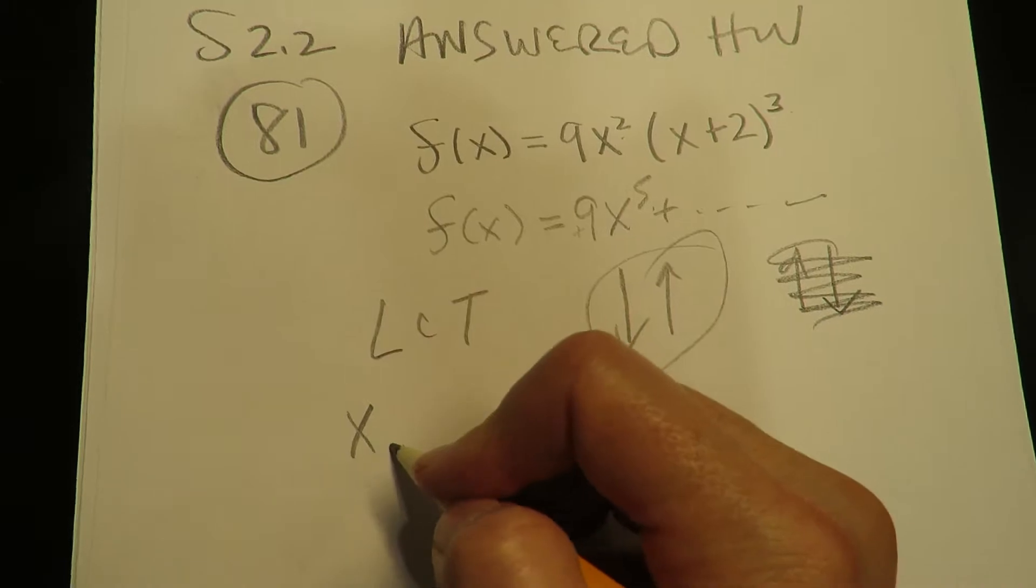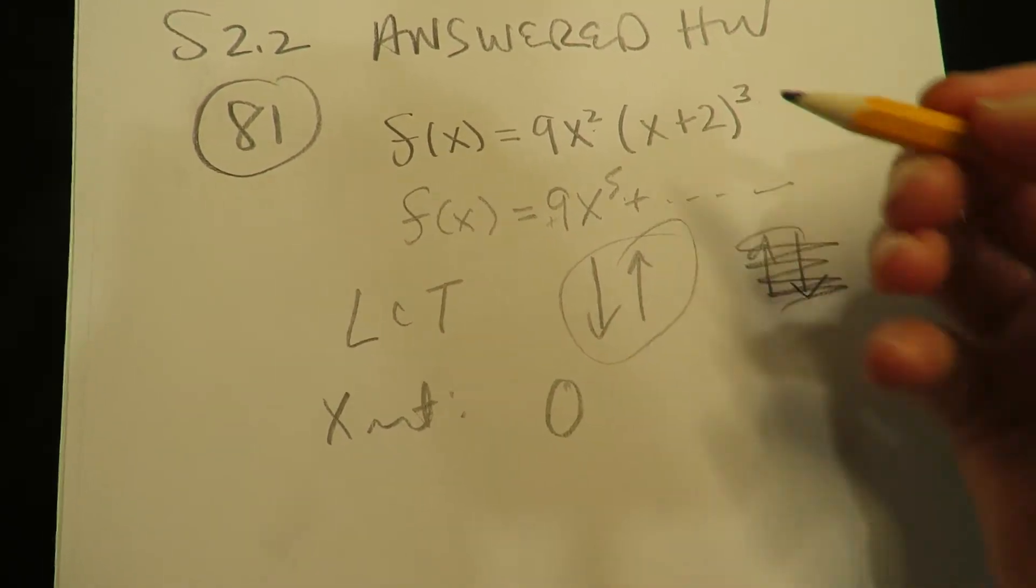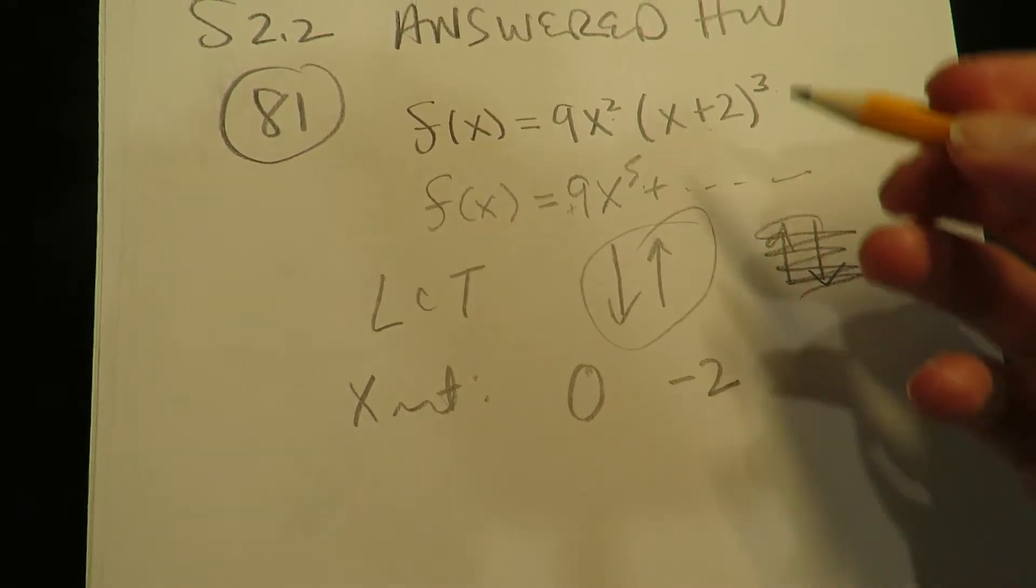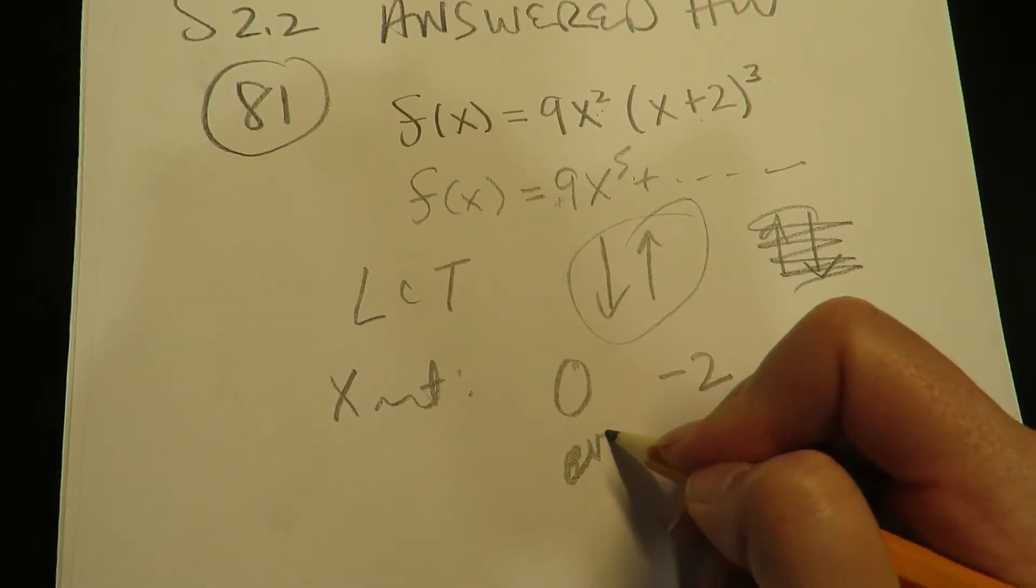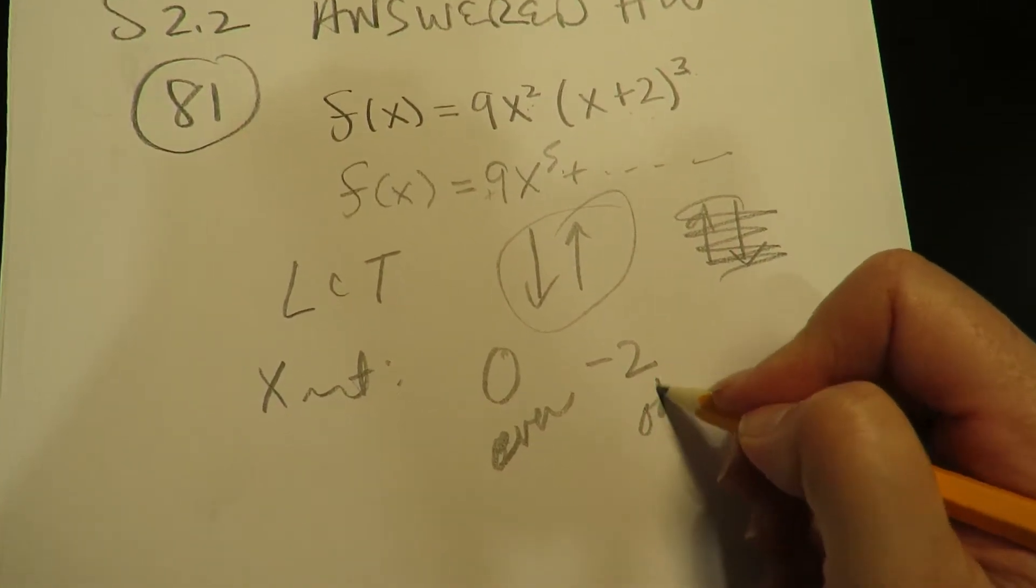Okay, so now in terms of the x-intercept, the x-intercept would be 0 for this x, it's negative 2. Now this guy's squared, which means it's even, and this guy's a cube, which means it's odd.